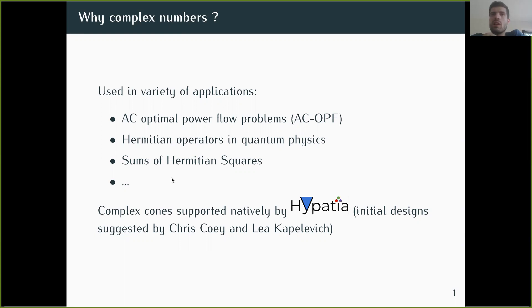In quantum physics, you have Hermitian operators that are represented with complex numbers. Also, in sums of squares, you have a version with Hermitian matrices that is used, for example, with non-commutative variables.